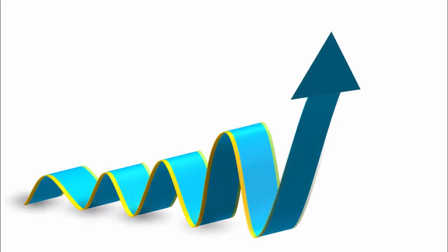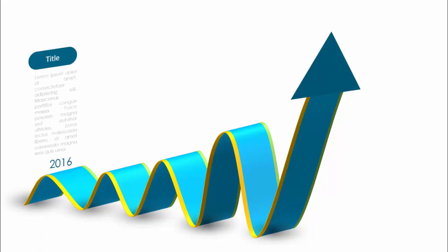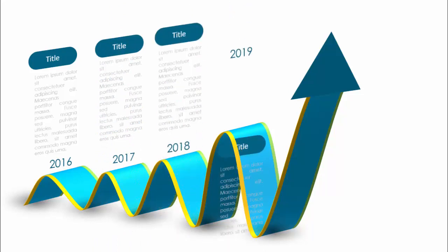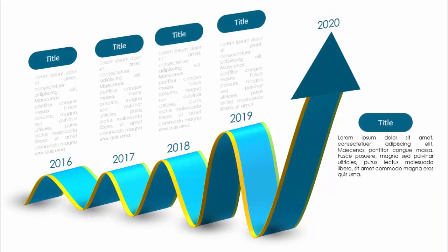Hello and welcome to my YouTube channel PowerPoint University. In this tutorial I'm going to show you arrow infographic timeline slides with five years and four years — I've created two different slides. When I click it will show you the arrow and then the borders up here, and when I click it will show you the year 2016 with the details, then 2017, 2018, 2019, and 2020.